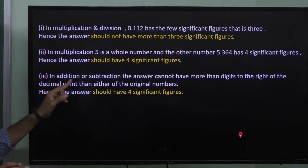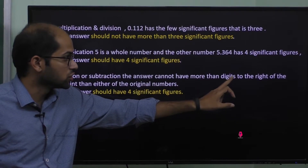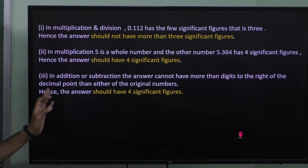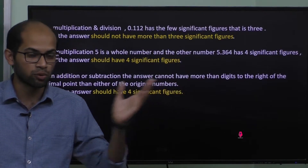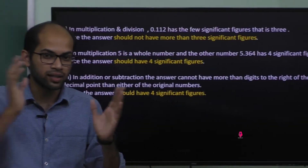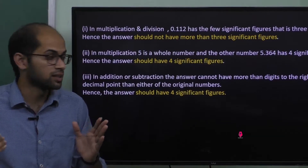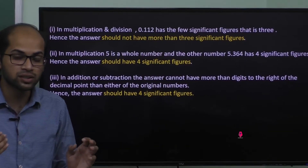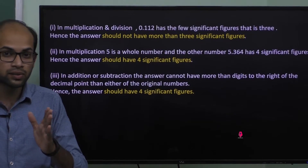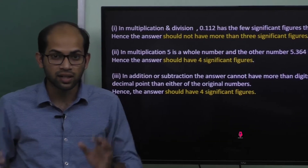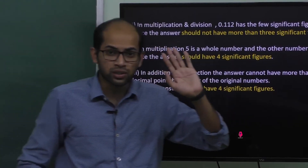Third case: in addition or subtraction, the answer cannot have more digits to the right of the decimal point than either of the original numbers. The answer should have 4 significant figures.